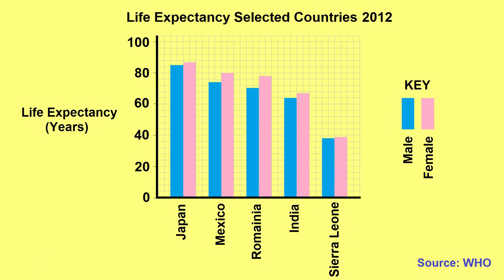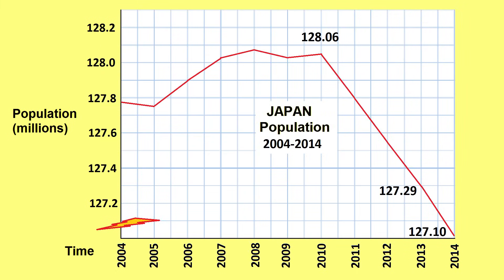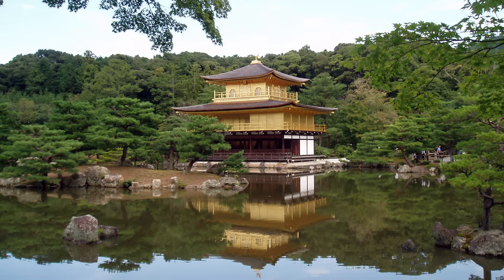Life expectancy is a measure of how long a person can expect to live from birth. Japan, for example, has one of the highest life expectancies in the world at 84.46 years, but also has a shrinking population. From 2010 to 2014, Japan's population shrank by 0.7%, going from 128.06 million to 127.2 million. Japan's population is projected to have over 40% aged over 65 by the year 2060. Like Japan, countries showing this population structure tend to be wealthy and highly urbanized.